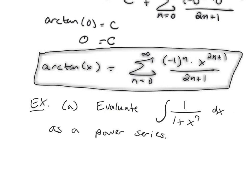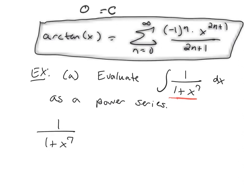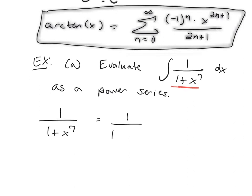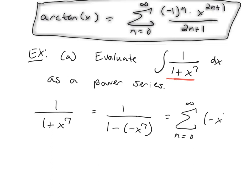Instead, I'm going to write the power series for the thing inside the integral, and then integrate the power series. Starting with 1 over 1 plus x to the 7th, I see 1 over 1, but the plus sign is not good, so I'm going to fix that and turn it into a minus — just like on the previous problems — and use our geometric series formula with negative x to the 7th.